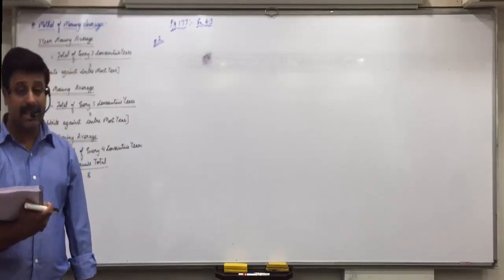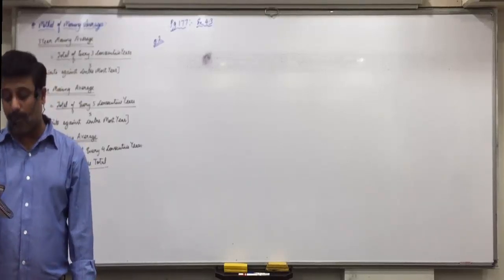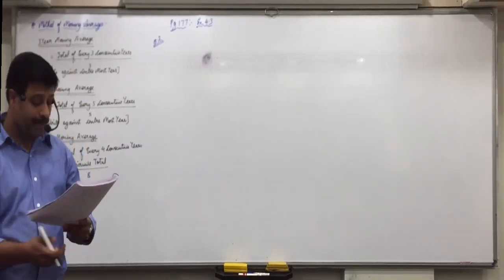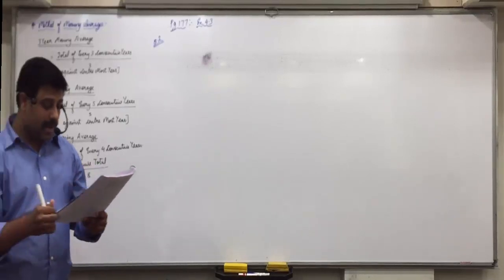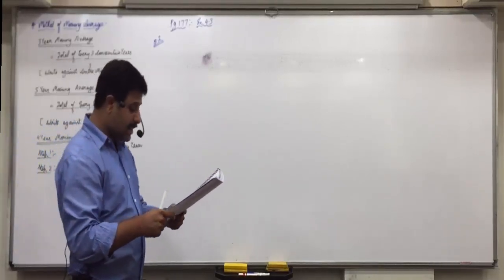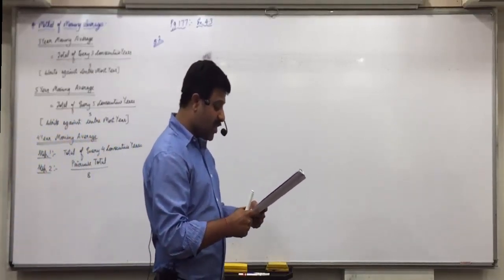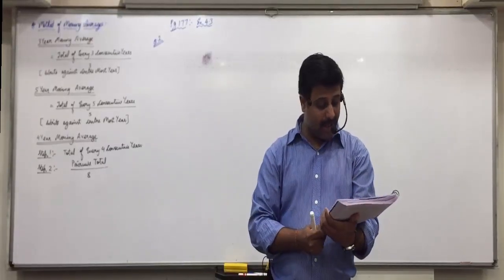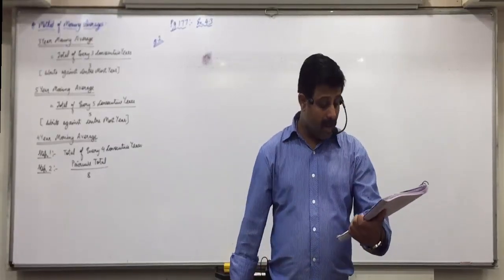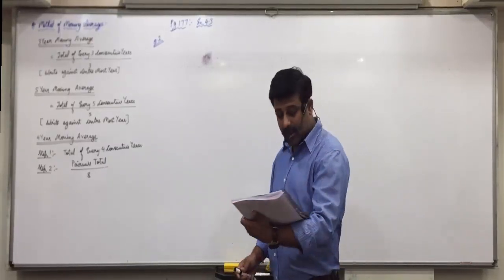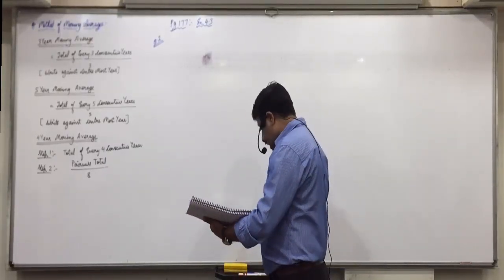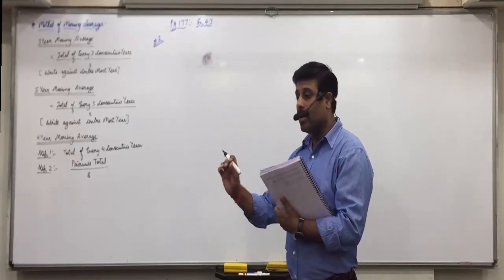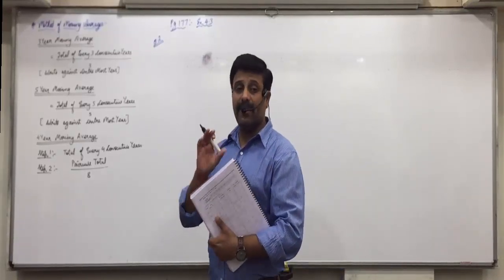Look at page 177, exercise 4.3, question number 2. The average monthly closing prices of shares of a company in the year 2016 are given in the following table. Find the trend using a 4-monthly moving average.